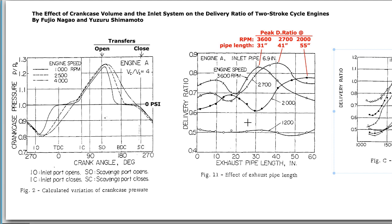This graph shows the effects on delivery ratio at different pipe lengths. You reach different peak delivery ratios at different pipe lengths because the diffuser wave comes back to the engine as a suction wave, which helps the delivery ratio by increasing the intake. It puts extra vacuum at the crankcase, pulling in more intake charge through the reed valve.